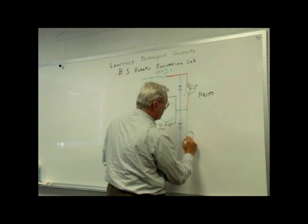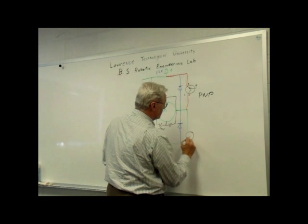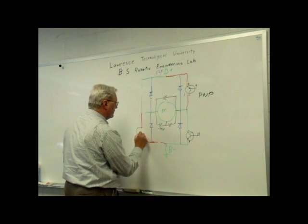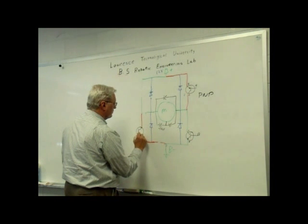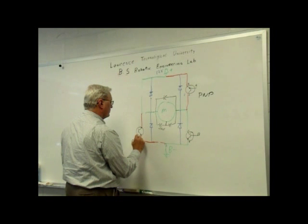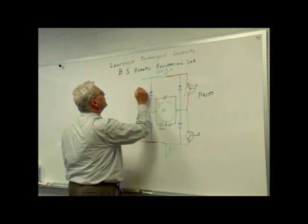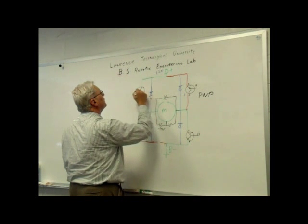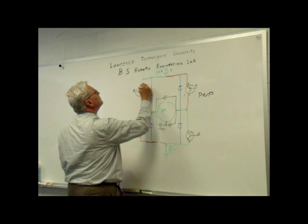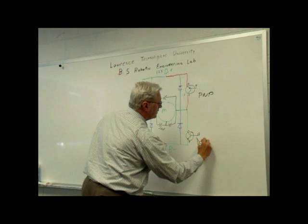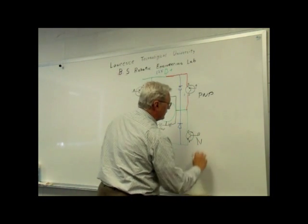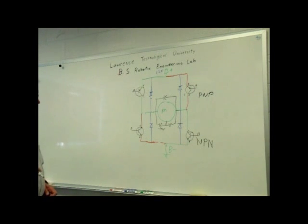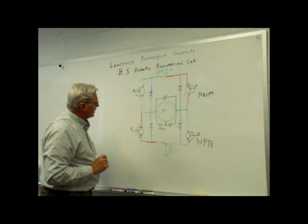Where we have the collector and base. Same thing on the other side — and as you might expect up here in the corner, same thing we have on the other side: NPN plus NPN. Now the way these work, with a transistor like this, we'll look at the NPN down the bottom here first.